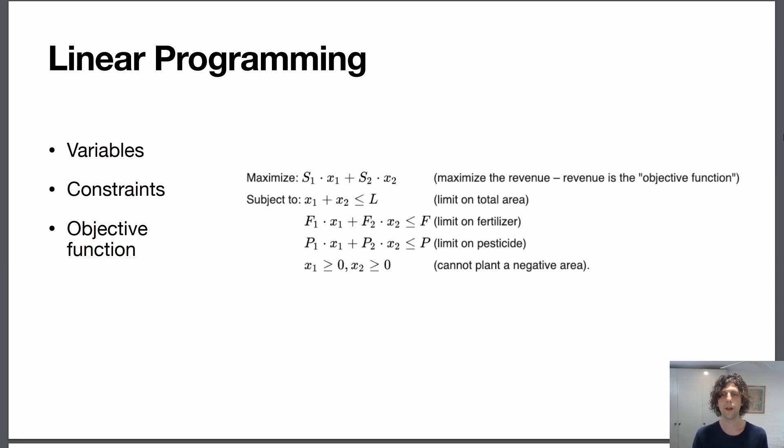Our objective function is we want to maximize the revenue so each crop gives us a different amount of revenue as represented by s1 and s2. And then given all of this information you want an algorithm or a technique to maximize the value of revenue so s1*x1, s2*x2.